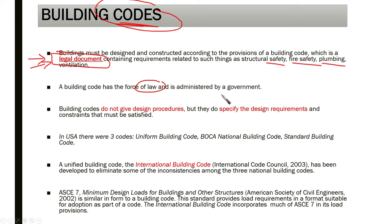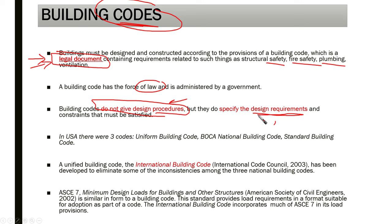Building codes do not give design procedures — this is an important distinction. They specify design requirements and constraints that must be satisfied, but they do not prescribe any design procedures. In the US, there are three different codes: the Uniform Building Code, the National Building Code, and the Standard Building Code.